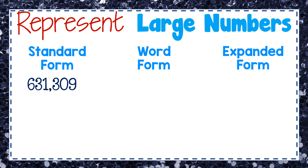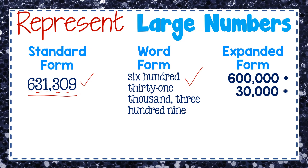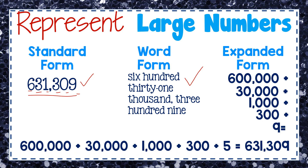Let's represent the number 631,309 in three forms. In standard form, it's written as the digits — the normal everyday way you see numbers. In word form, it's read as: six hundred thirty-one thousand, three hundred nine. In expanded form, we represent each digit by its value: six hundred thousand, thirty thousand, one thousand, three hundred, no tens, and nine.